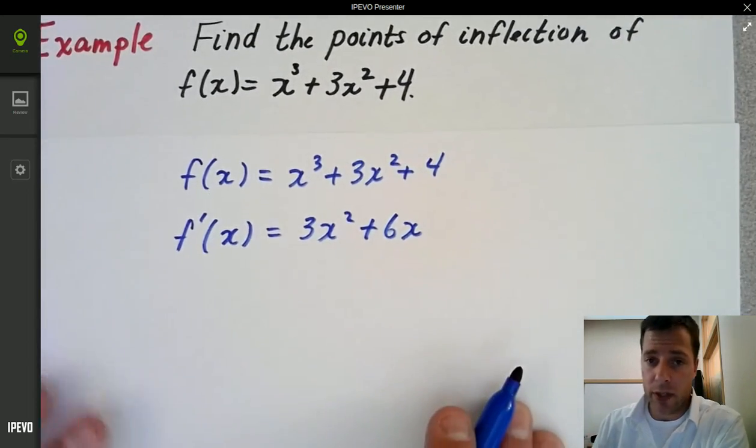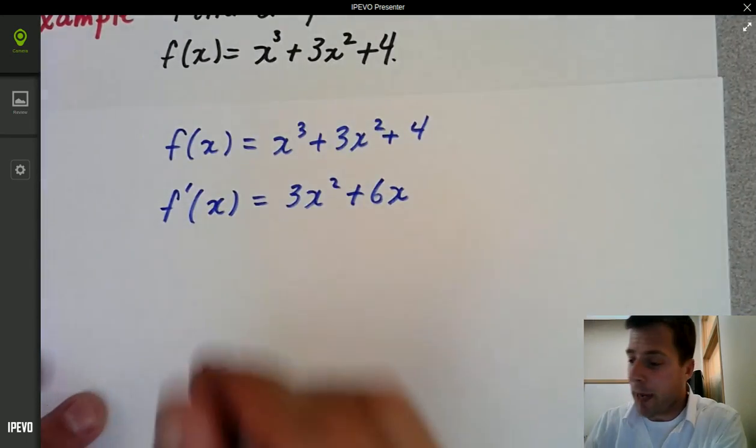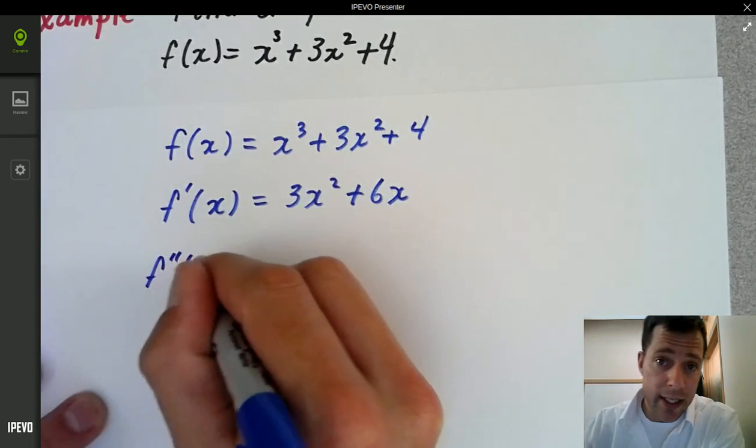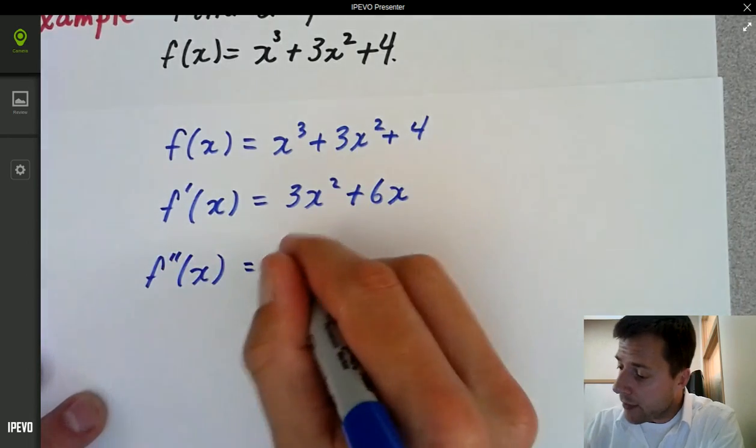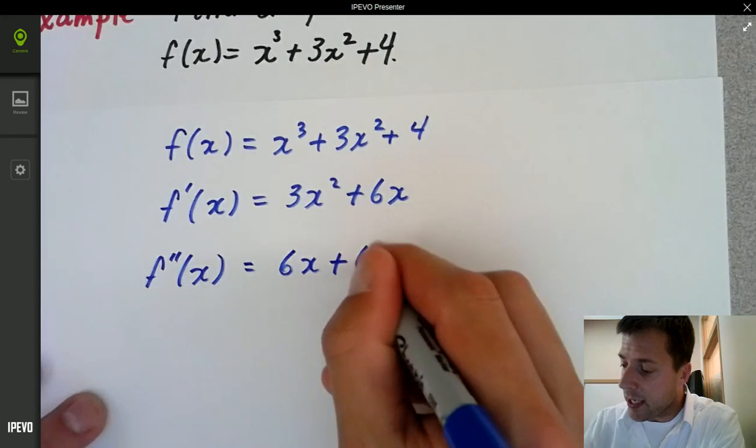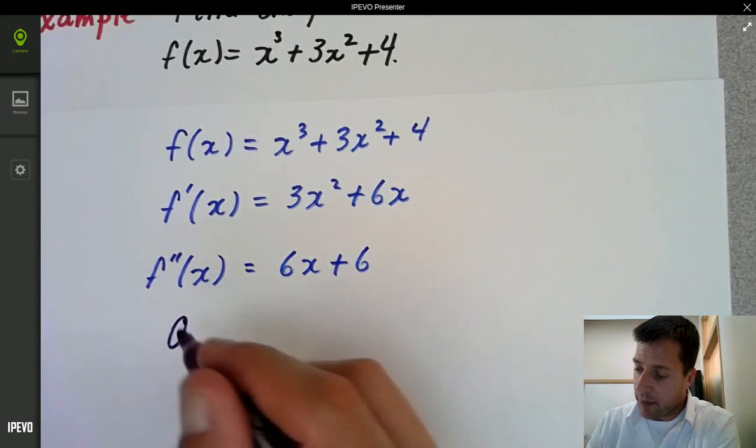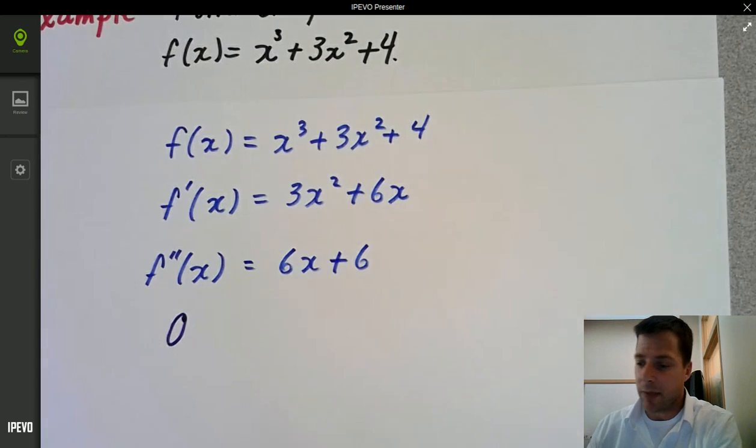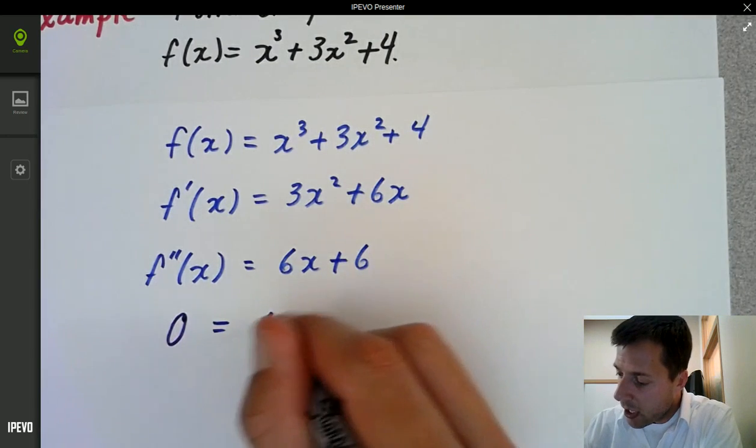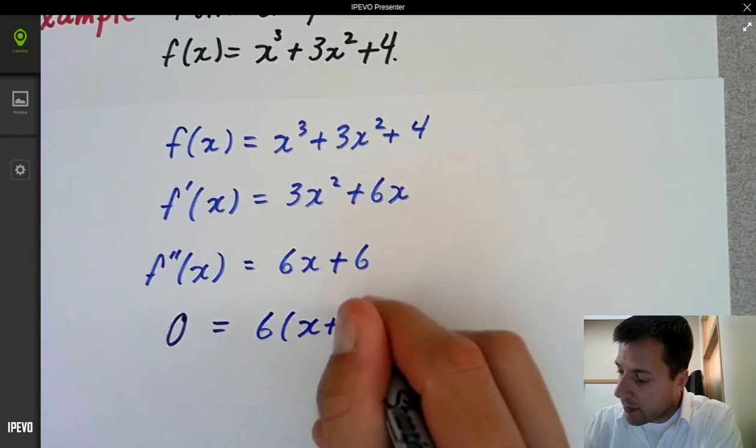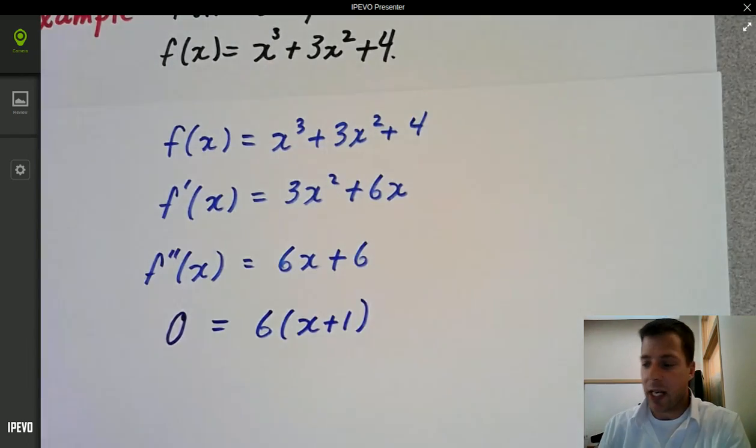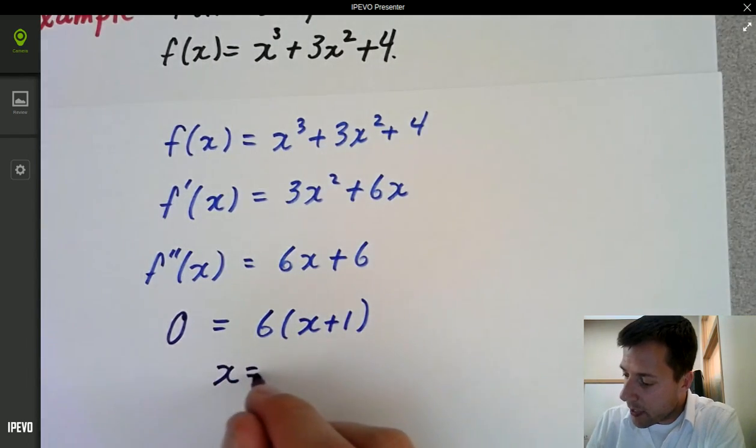We're not going to look for the critical numbers there, it's not what it's asking. We're looking for possible points of inflection, so let's go straight to the second derivative. So we're going to have 6x plus 6. Now, just like the first derivative, we're going to set the second derivative equal to 0 to list our possible points of inflection. And I'll go ahead and factor out the 6 here. And I know that x is going to equal negative 1.